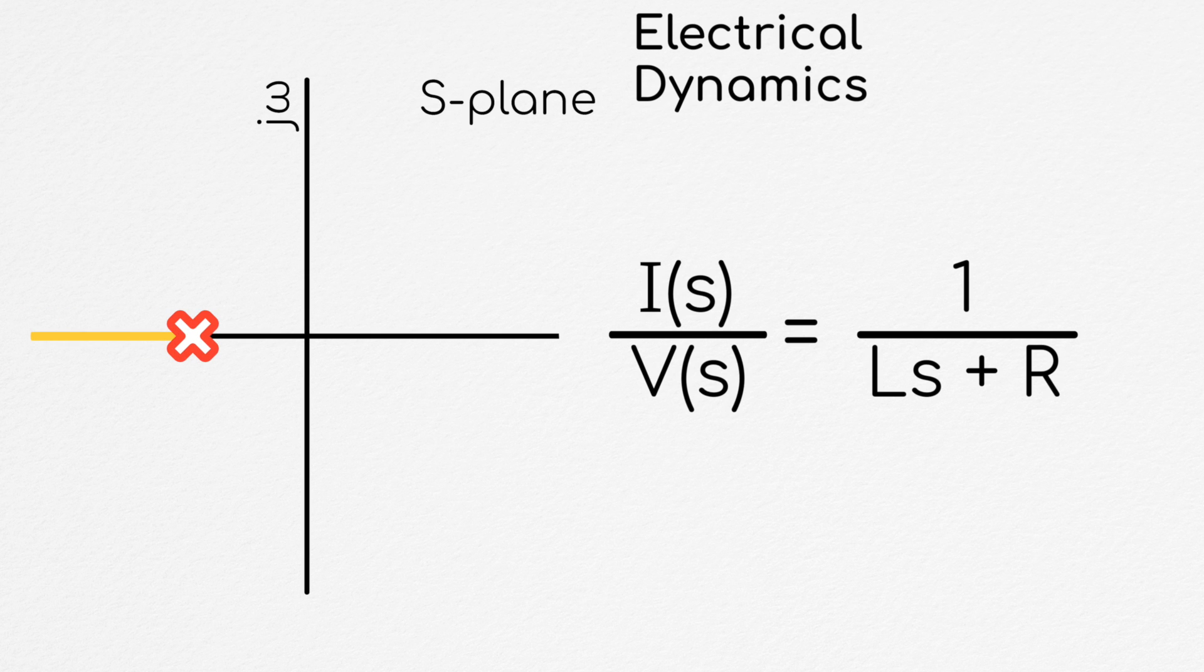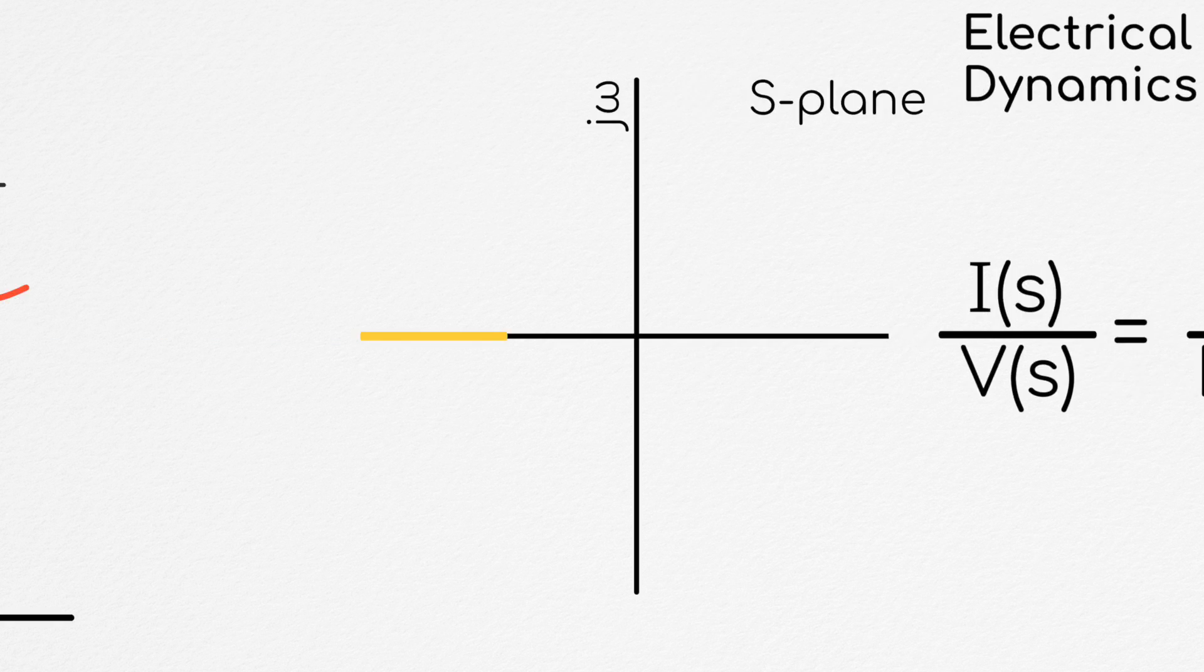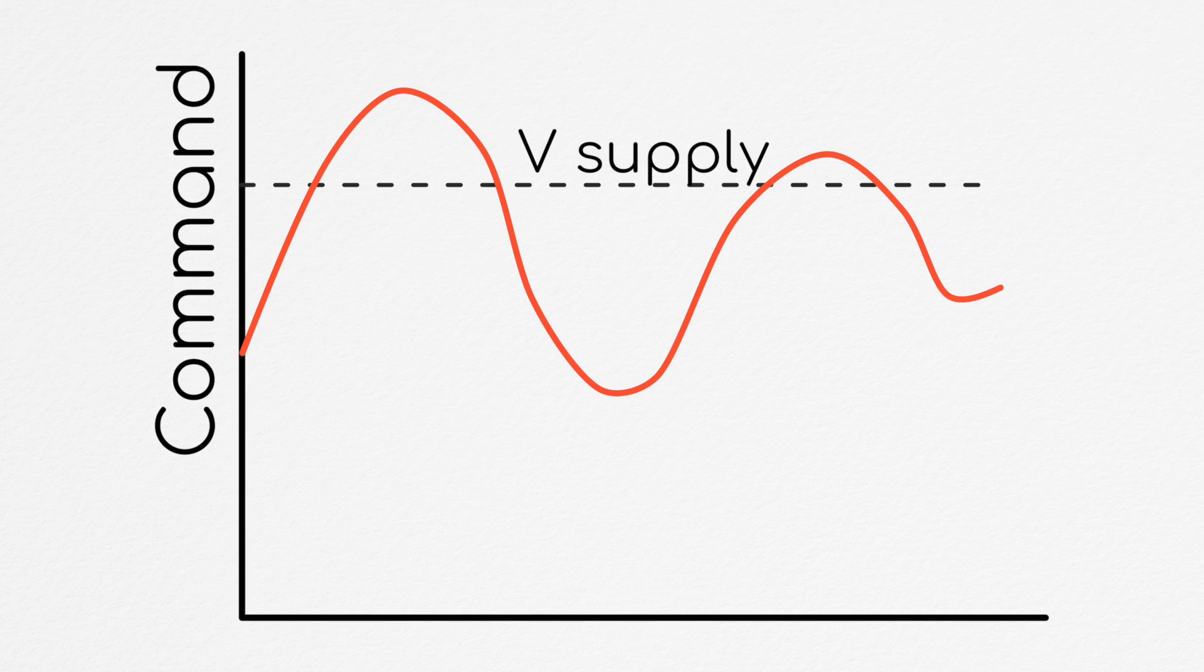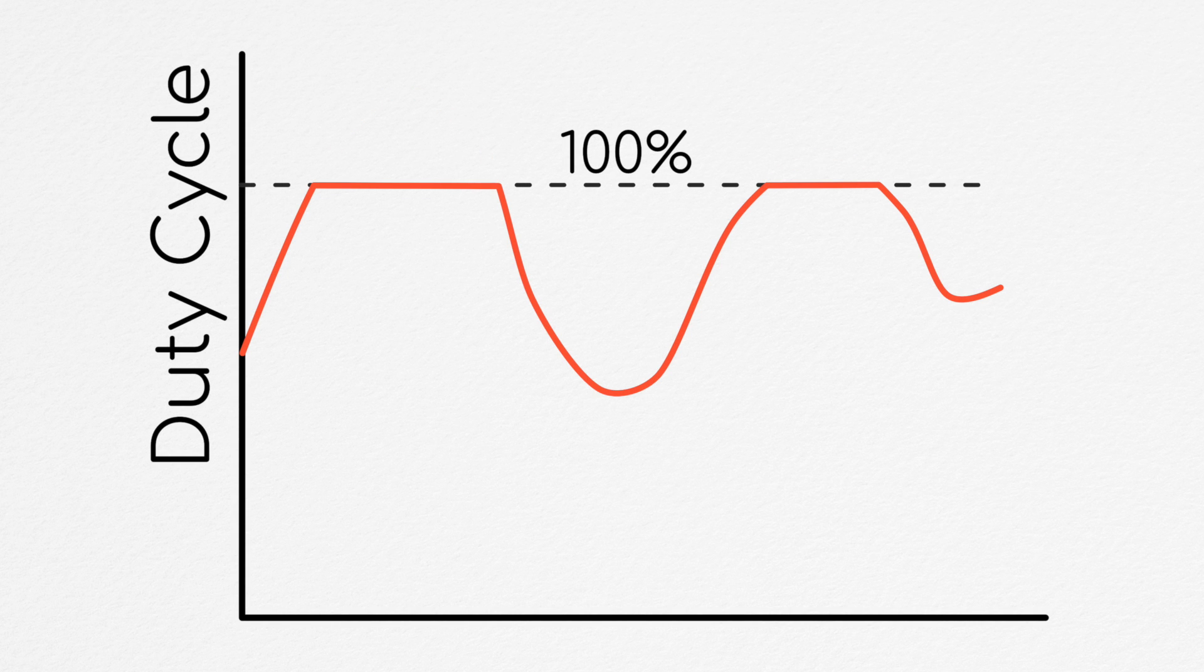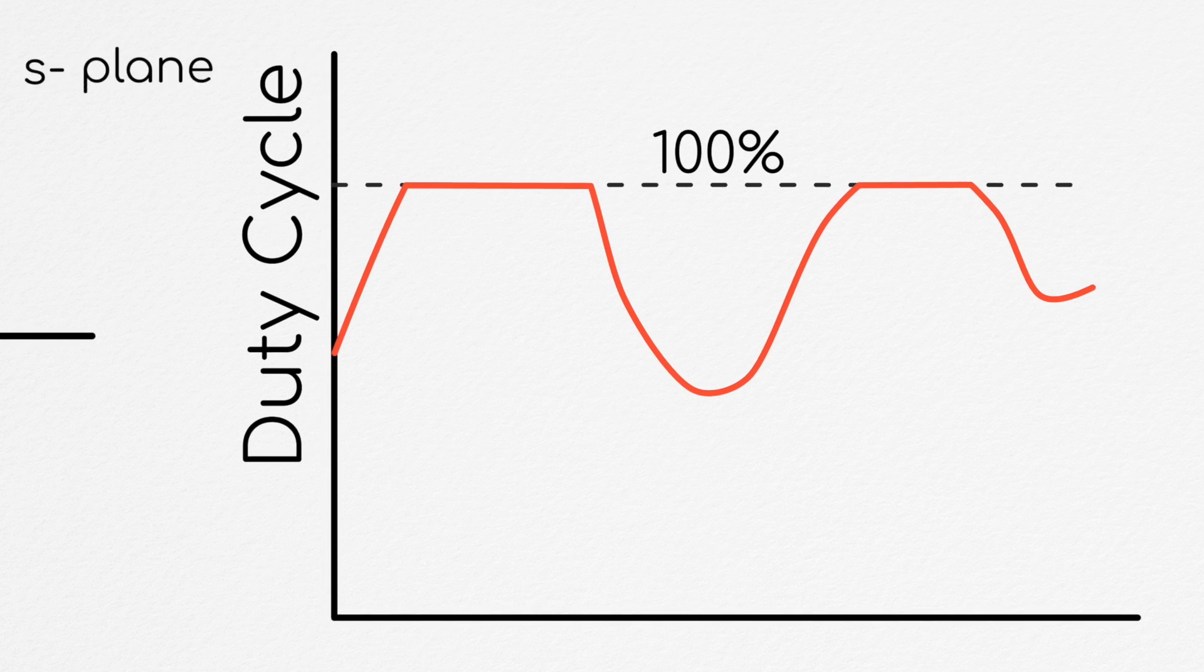Looking at the root locus, we see that since we only have the one real pole, we could in theory just use a proportional controller here. And as we crank the gain up, this pole will shift left and our system will respond quickly. However, there's a few practical issues with this. First of all, the voltage we can supply will at some point saturate, and then we'll have a non-linear system.